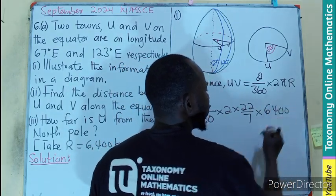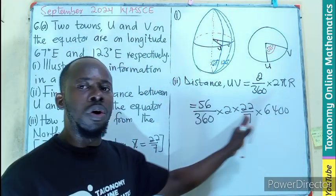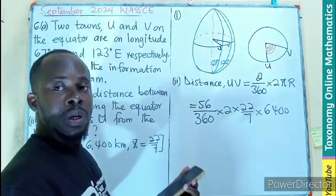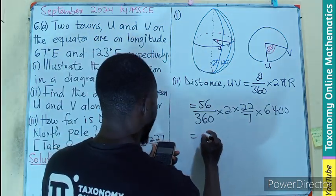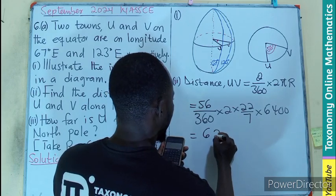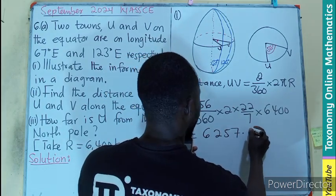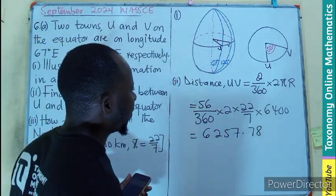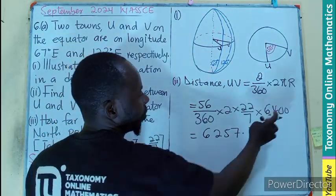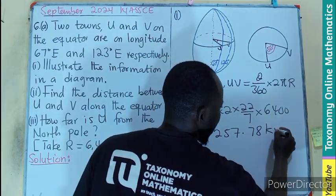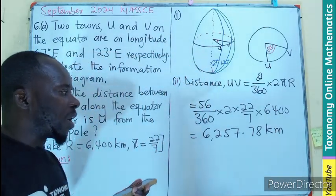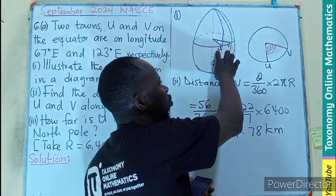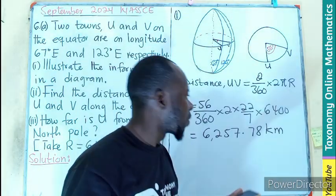6,400 kilometers. So we can put all these in our calculator and see what the value will be. And if you do that, you'll be having 6,257.78. We are leaving our answer to two decimal places. This is the distance. So that becomes 6,257.78 kilometers. That would be the distance between the two towns on the equator.